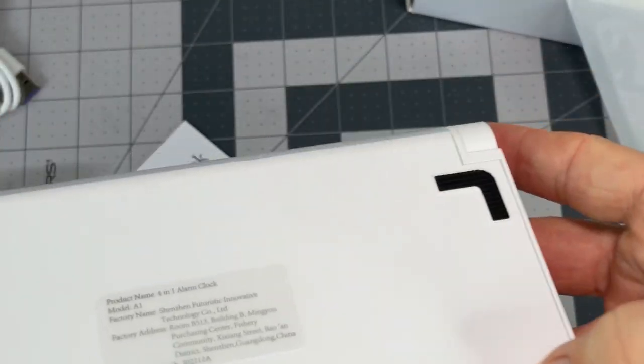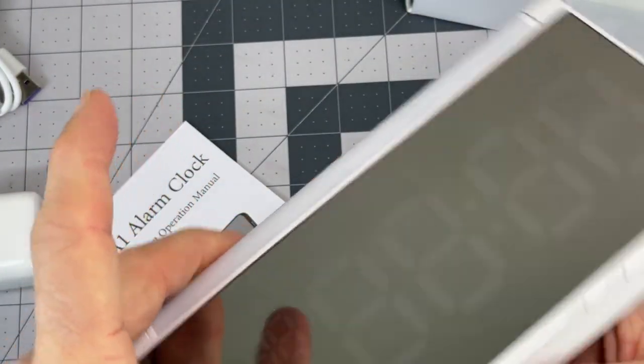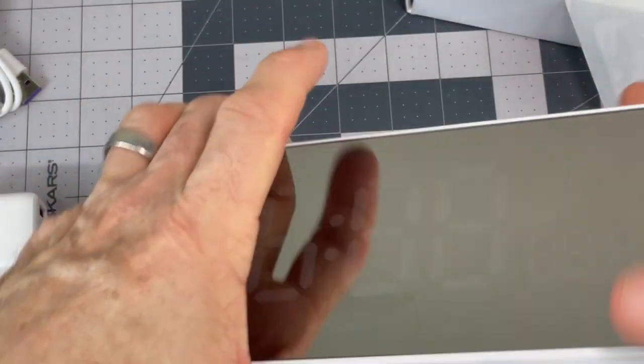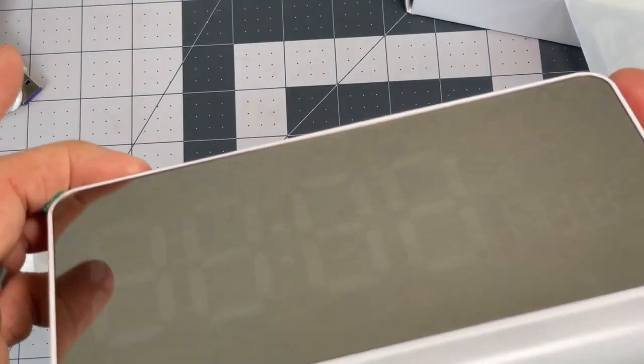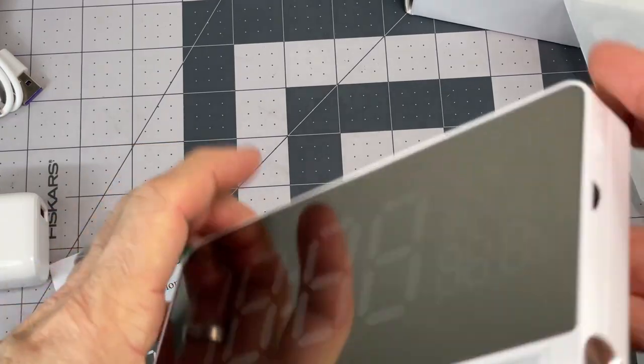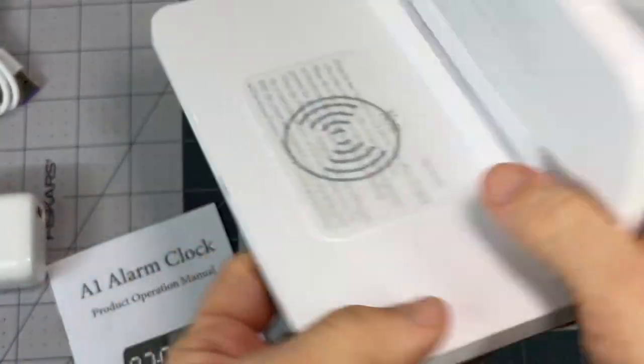It's got anti-slip feet down here. That's nice. And wow, big mirrory type numbers. Be able to see those from anywhere. Got a cover on there. I assume this is going to just open up. There we go.